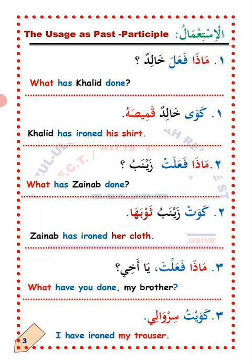Wahid, number one. Mada fa'ala Halid? — What has Khalid done? Answer: Kawa Halidun qamisa — Khalid has ironed his shirt. Ithnan, number two. Maza fa'alat Zaynab? — What has Zaynab done? Answer: Ikawat Zaynab thawbaha — Zaynab has ironed her cloth.